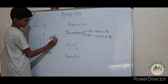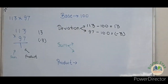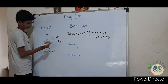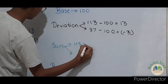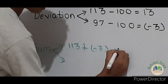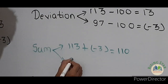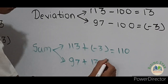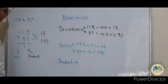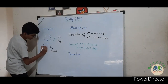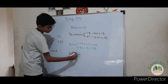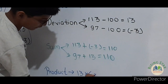So write here 13, and here minus 3. Now let's find the sum. You can add either way and the answer will be the same. 113 plus minus 3 equals 110, and 97 plus 13 also equals 110. So write 110 here. Now let's find the product. We have to multiply 13 into minus 3, which gives minus 39.